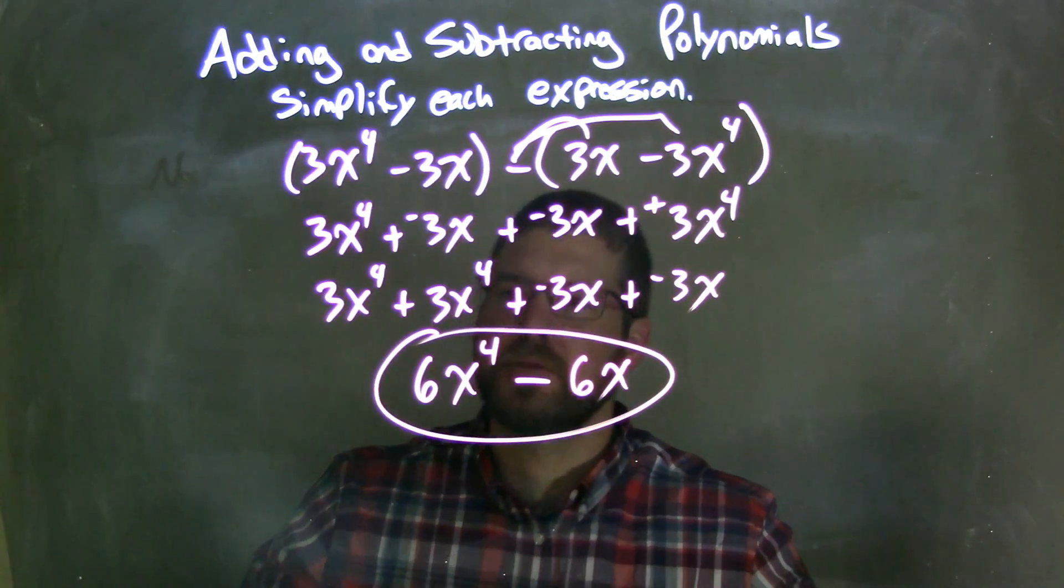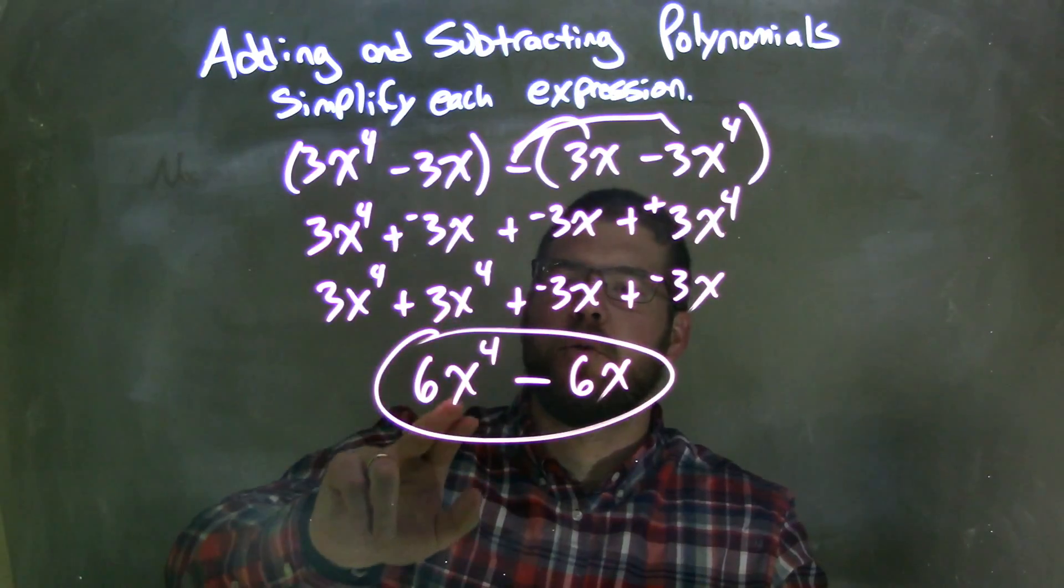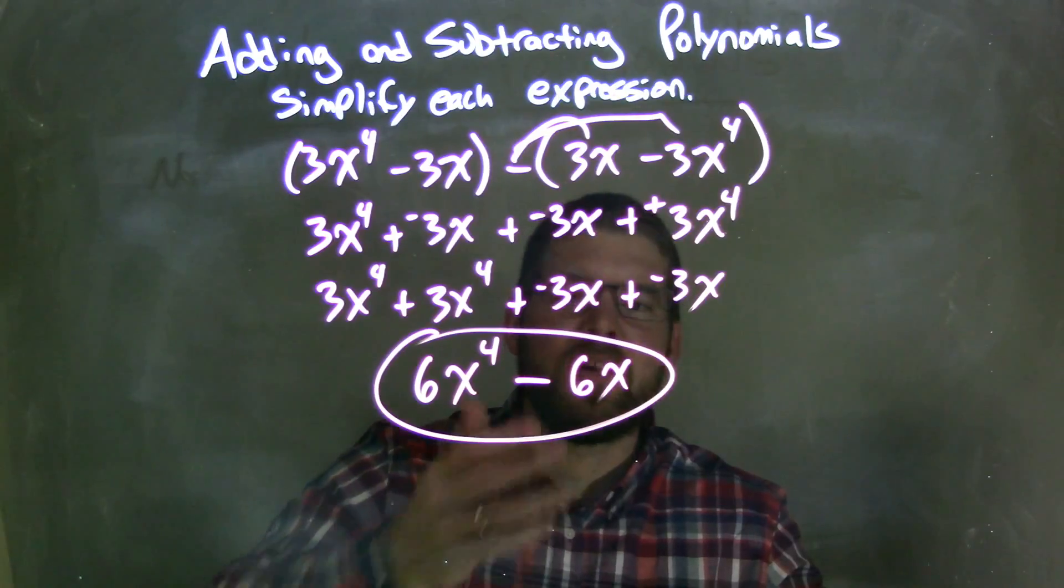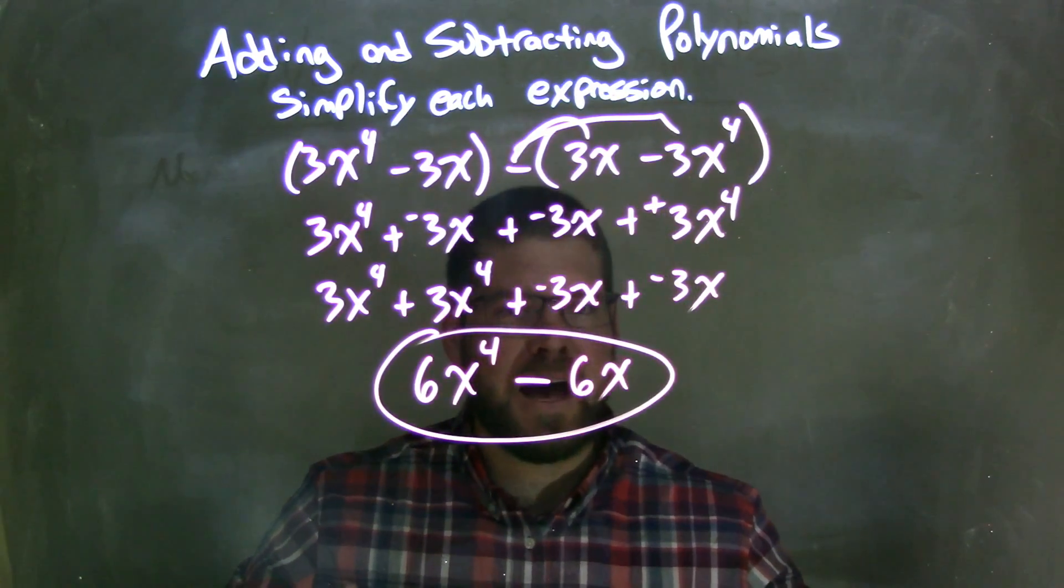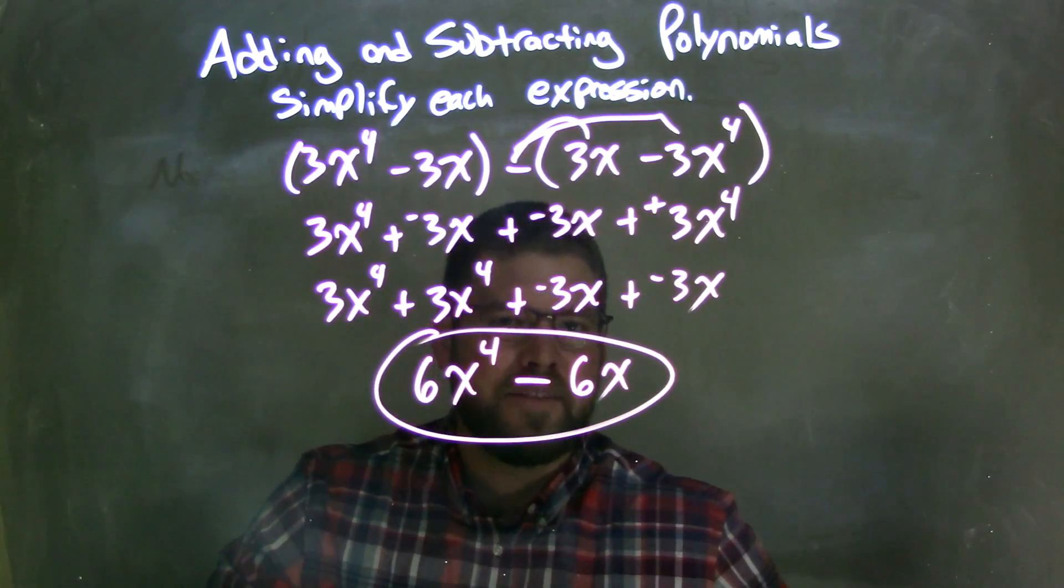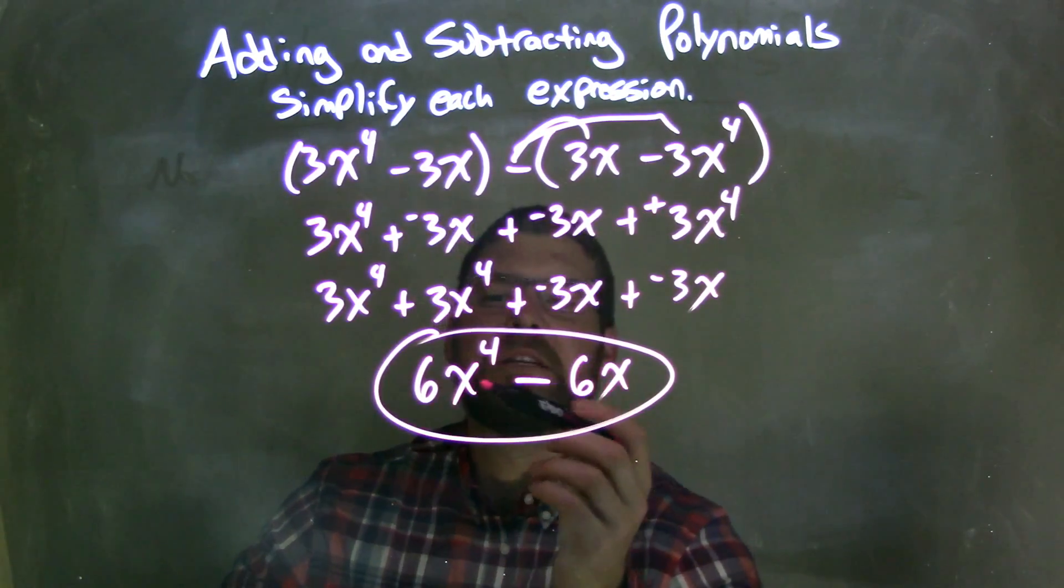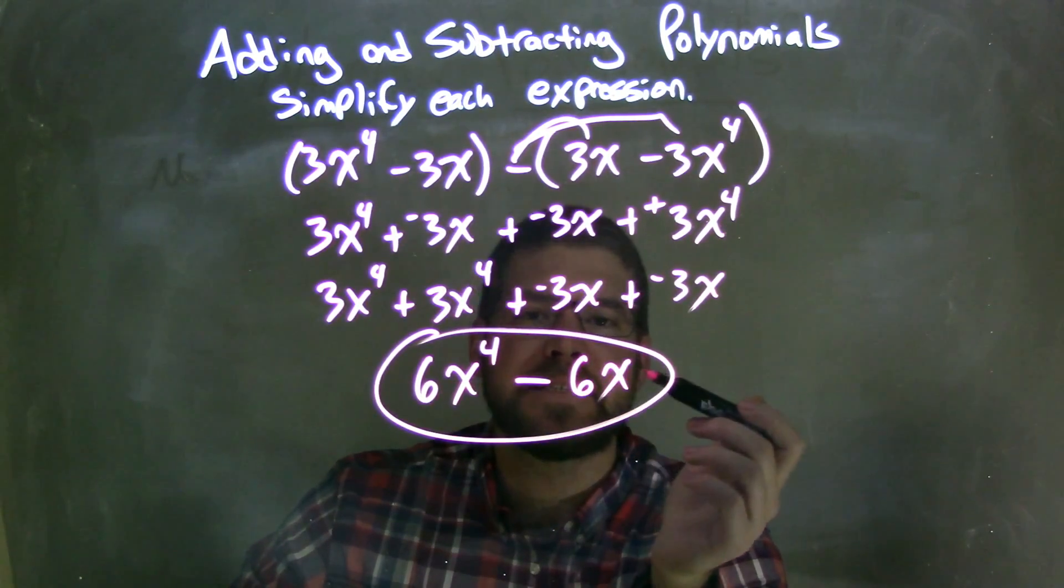Now, I combine my like terms. 3x to the 4th plus 3x to the 4th is 6x to the 4th. And then, negative 3x plus a negative 3x is a plus a negative 6x. Which we just wrote as minus 6x. Okay? For my final answer, it's not really neat to have it as a plus or a negative. So, we have our final answer here. Which is 6x to the 4th minus 6x.